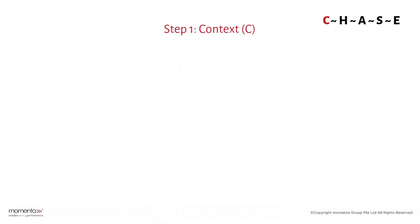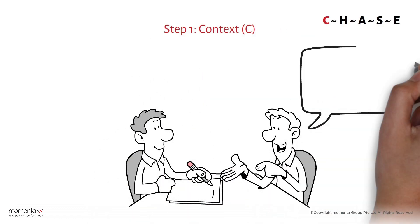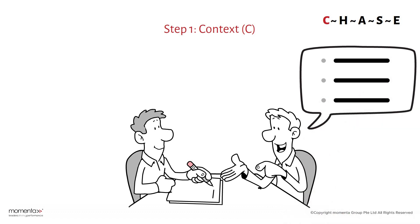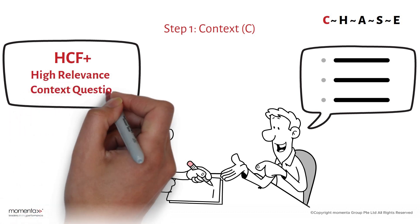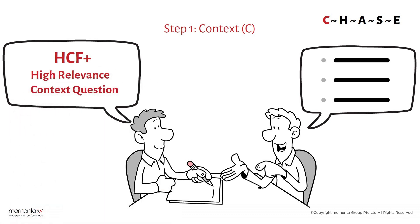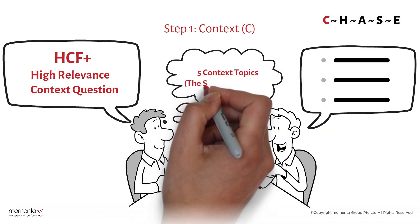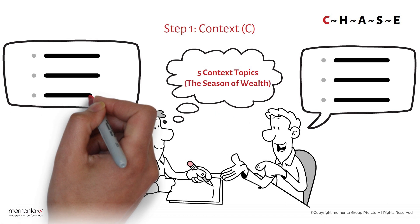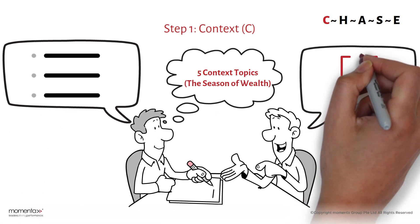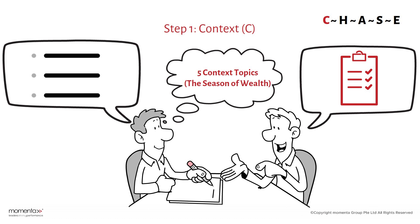Step one: Context. It all starts with context. Recall the three to five key points you've gathered from your client, primarily through the HCF plus and the high relevance context question we've covered. Additionally, remember the five context topics, which include the season of wealth. Quickly recap these to the client, ensuring that the client acknowledges your thorough understanding of their current context. This not only displays your attentiveness, but also lays the foundation for a profound and strategic discussion that aligns with your client's aspirations.